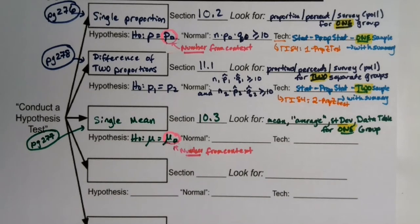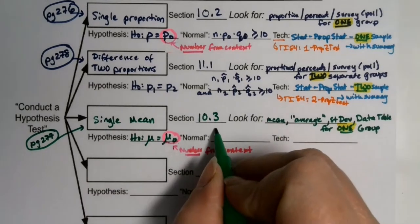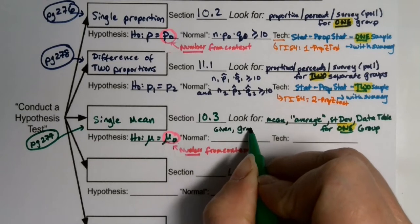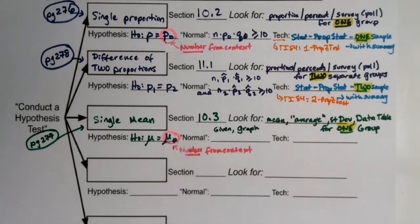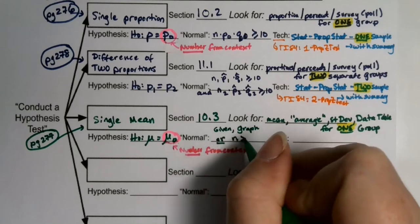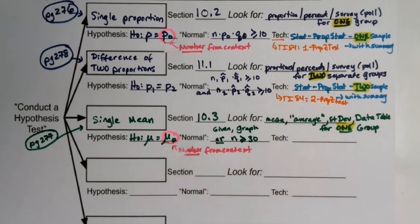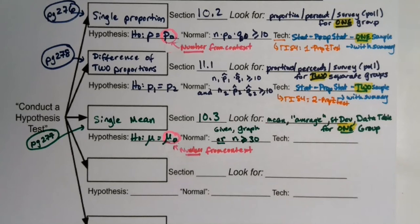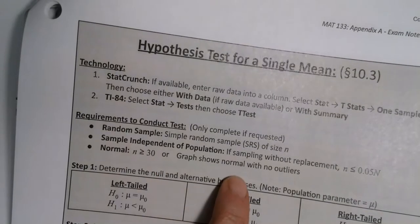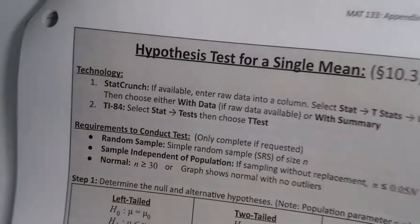For normality with the single mean test, you have three options: it can be stated as given, there can be a normal probability plot where you check if the points are linear, or n can be greater than or equal to 30. The page says: n > 30, graph shows normal without outliers, or it's simply given to you.